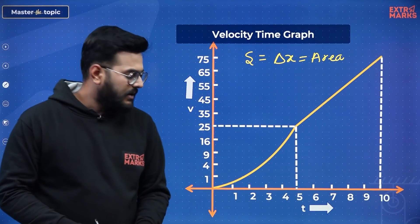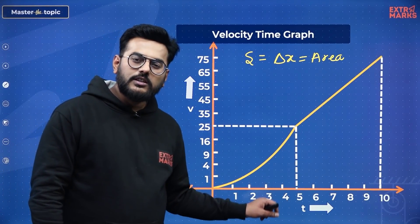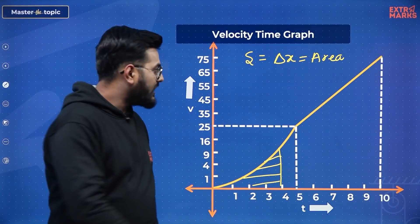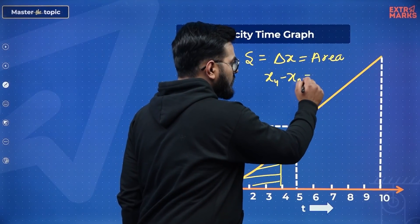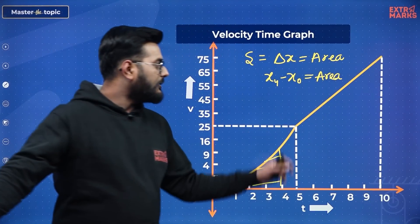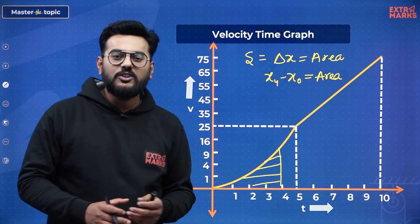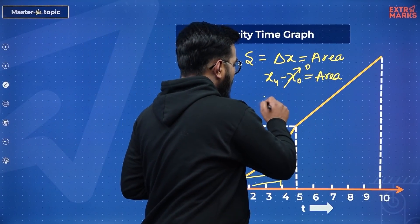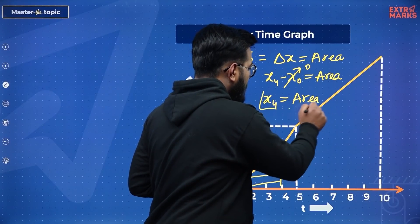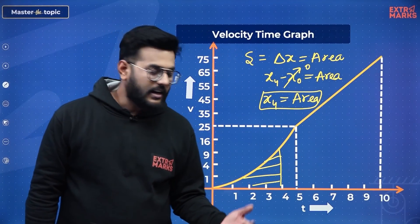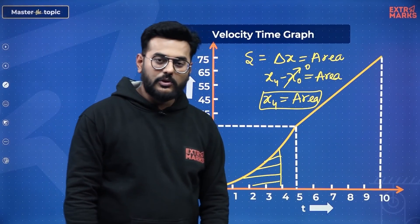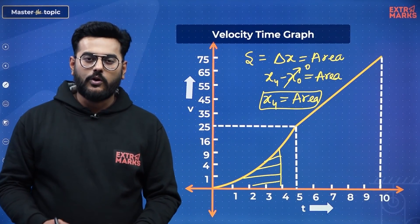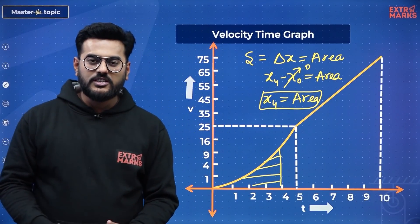To find position at T = 4, I calculate the area from T = 0 to T = 4. This area equals X4 − X0. Since the initial position was given as 0, the area directly gives the position at T = 4. Similarly, I can find position at T = 6 or T = 8 by calculating the respective area. In this manner, position can be found for every second.